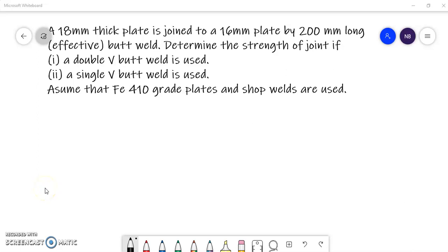In this class we are going to solve and find out the strength of a joint which could be connected either using a double V butt joint or a single V butt joint. We are given two plates, one 18 mm thick and the other 16 mm thick.